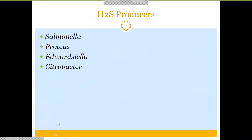Known H2S producers — these organisms are well known to produce the black precipitate in tube agars: Salmonella, Proteus, Edwardsiella, and Citrobacter. Remember these because you can use this knowledge to your advantage on exam questions.